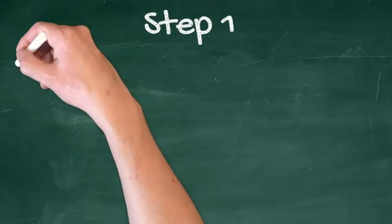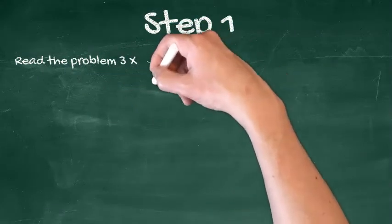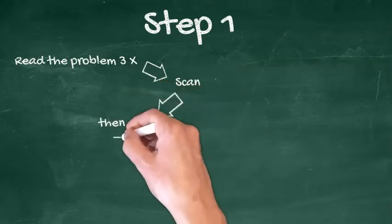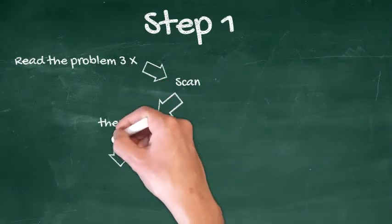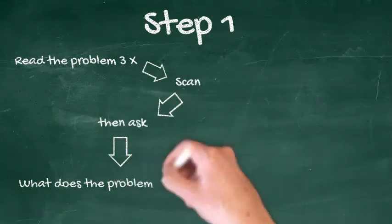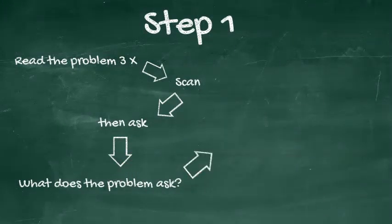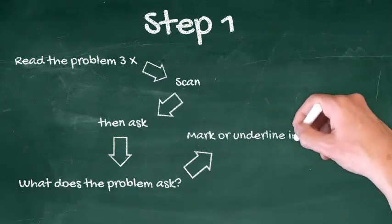Step 1. Read through the problem at least three times. The first reading should be a quick scan and the next two readings should be done slowly to find answers to these questions. What does the problem ask, usually located at the end? Mark all information. Underline all important words or phrases.